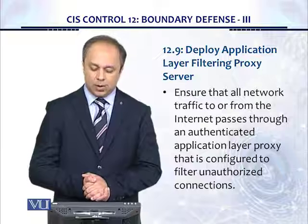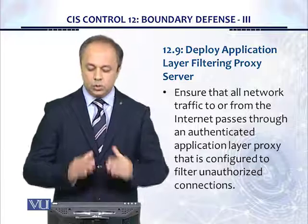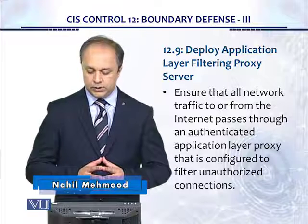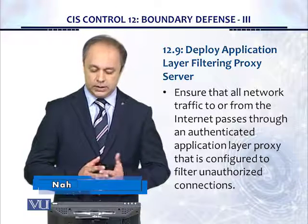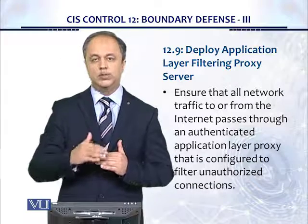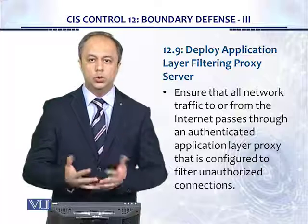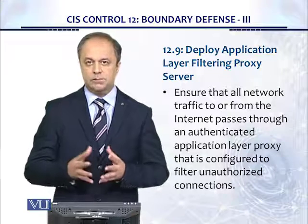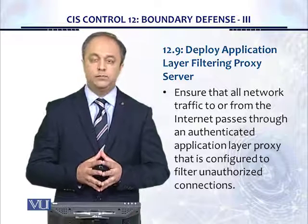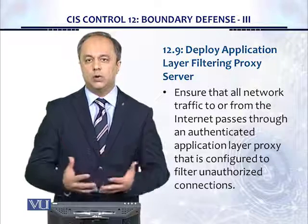12.9 tells us to deploy an application layer filtering proxy server — ensure that all network traffic to or from the internet passes through an authenticated application layer proxy configured to filter unauthorized connections. This feature has intelligence for the OSI model to work up to the application layer, understanding what applications are being used, what ports and feature sets they use, and what the traffic pattern is. If there are any anomalies, the proxy should detect and block that anomalous traffic.